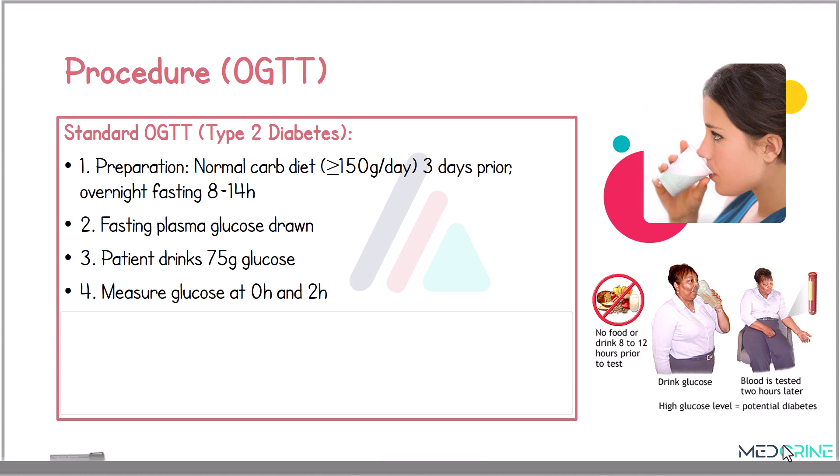When performing an oral glucose tolerance test, the test is conducted in the morning while the patient is sitting or lying down. No food, alcohol, or smoking is allowed for 8 to 12 hours beforehand, so we advise patients to fast overnight for 8 to 14 hours.